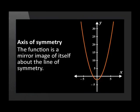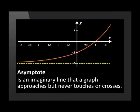When working with any section of mathematics, there is always important terminology that must be understood, and this section on functions is no different. Firstly, let's revise what we mean by axis of symmetry. The axis of symmetry is the line of symmetry where the graph is a mirror image of itself. Now, let's look at the word asymptote. An asymptote is an imaginary line that a graph approaches but never touches or crosses.